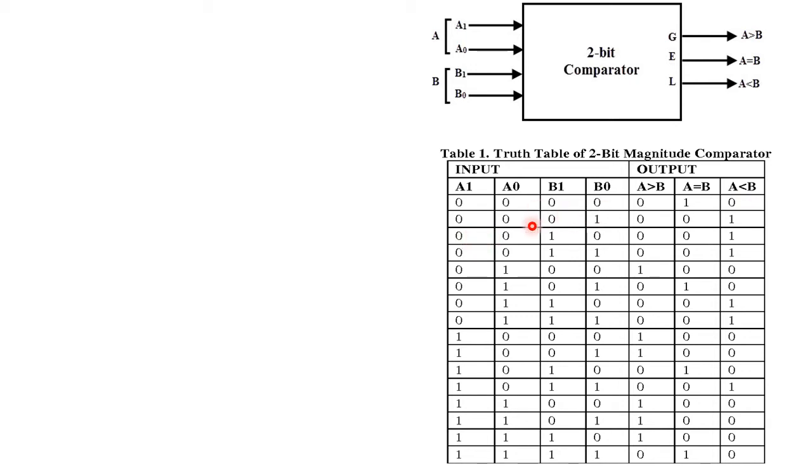Similarly, if you consider the second input condition where a1 a0 are both 0 (meaning A is 0) and b1 b0 are 0 1, definitely B is greater than A, that means A is less than B. So we place 1 for this term. Repeating the same procedure, after the last case when we have all four inputs as 1111, equal becomes 1, greater is 0, and less is 0.